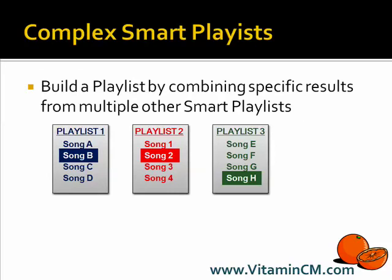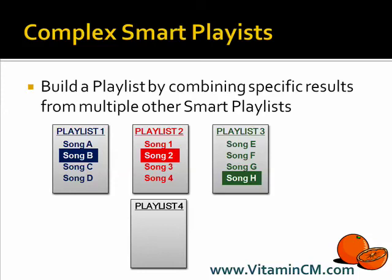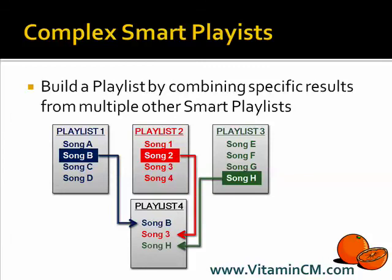With complex smart playlists, you can build several smart playlists that do specific things. For instance, you could build one that says show me all my new songs, another that says show me all my favorite songs, and a third that says show me songs I haven't heard in a really long time. Then you could build a fourth smart playlist that randomly takes songs from playlists one, two, and three — grabbing songs from those three playlists and including them into this fourth complex smart playlist.